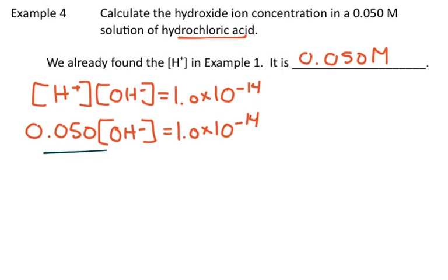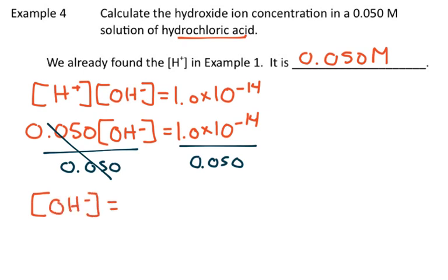All that's left is a bit of math. Divide by 0.050, and we can find the concentration of OH-. Put that into the calculator, and if we go to sig figs, which would be 2, we get 2.0 times 10 to the minus 13 molar.